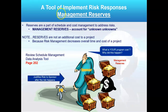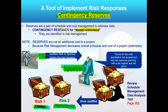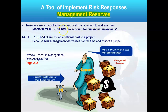There is another type called management reserve. So there are only two types of reserves: contingency reserves, which the project manager owns because you've identified the risks and planned for them, and management reserves. Management reserves are a little different — they're for unknown unknowns. It means we didn't identify the risk and we didn't see it coming.